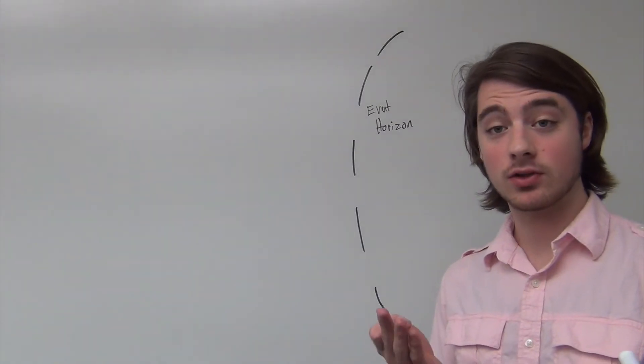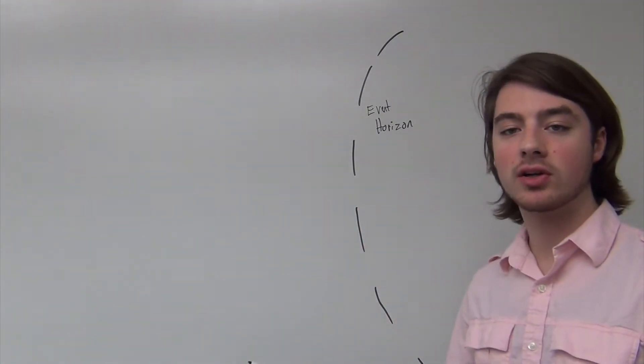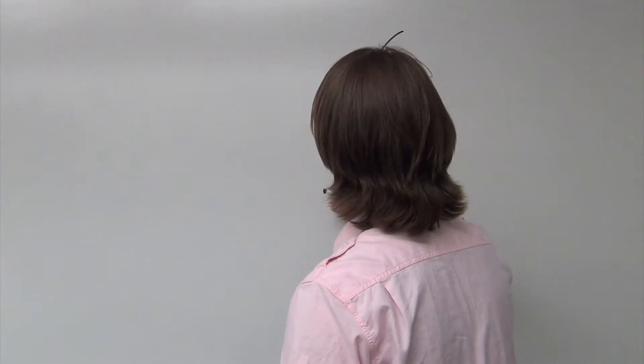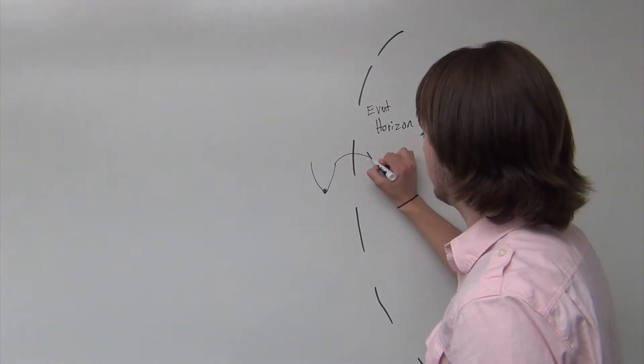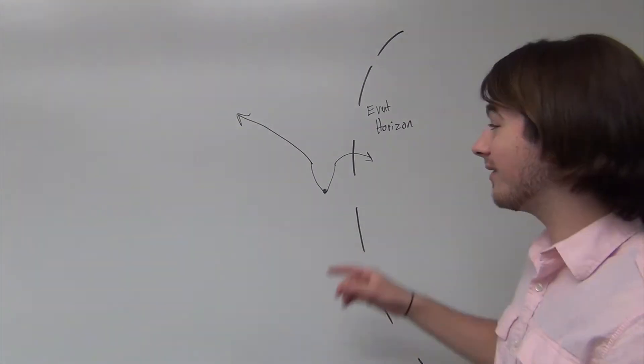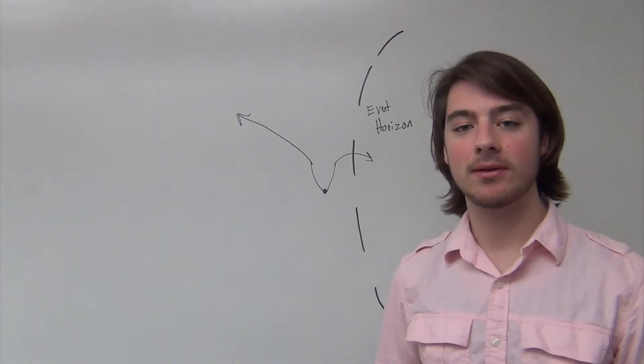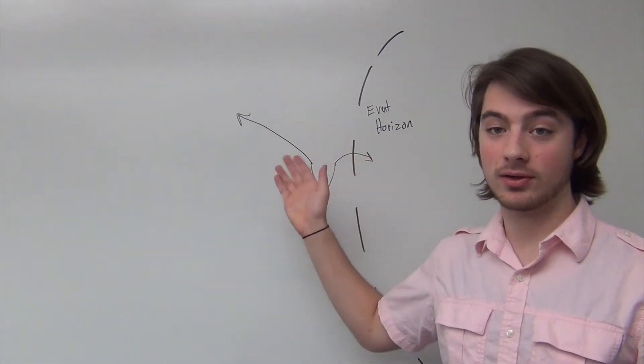Now imagine this spontaneous creation and annihilation happening near the event horizon of a black hole. Suppose that a particle-antiparticle pair is produced. Now perhaps the antiparticle gets sucked into the black hole while the particle escapes off to infinity. The antiparticle will actually decrease the mass of the black hole. If this happens frequently enough, the mass of the black hole will decrease while it radiates particles.